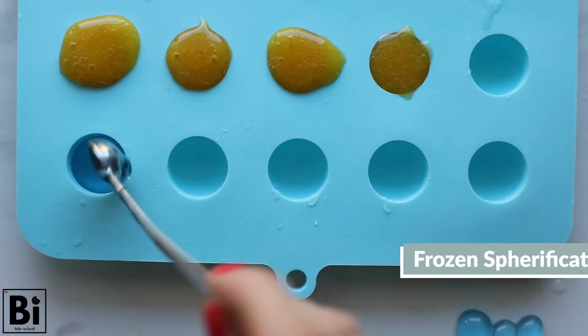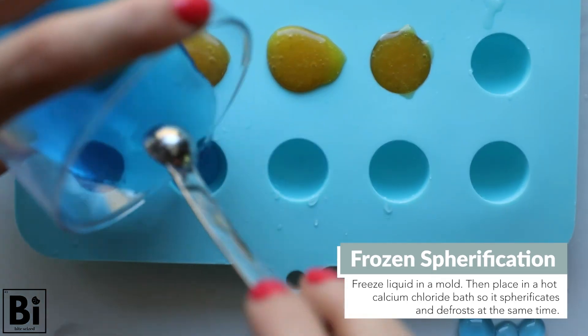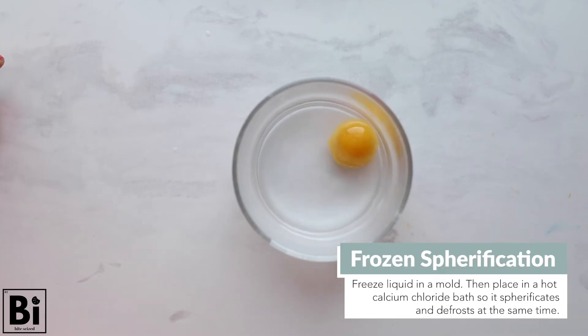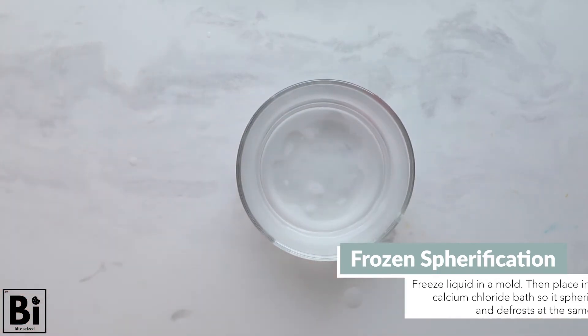The other method you can try out is frozen spherification. Taking the liquid, putting it into a mold, and freezing it. After it freezes, place the frozen sphere in a hot calcium chloride bath, so just heat the calcium chloride bath in the microwave or on the stovetop.